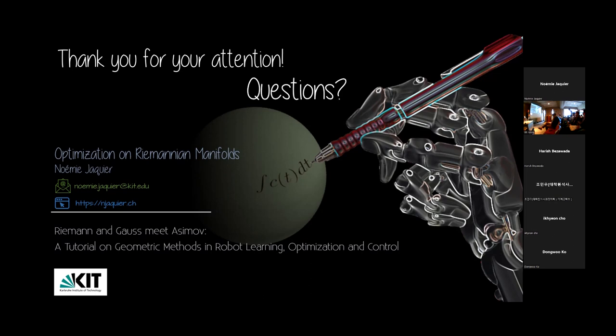Q: How does computation time compare between Euclidean and Riemannian methods? A: A single iteration can be slightly more expensive for Riemannian manifolds, though not always — for the sphere the operations are very simple. However, you converge faster and in fewer iterations, so you recover the overhead. Overall the total computation is comparable or better.